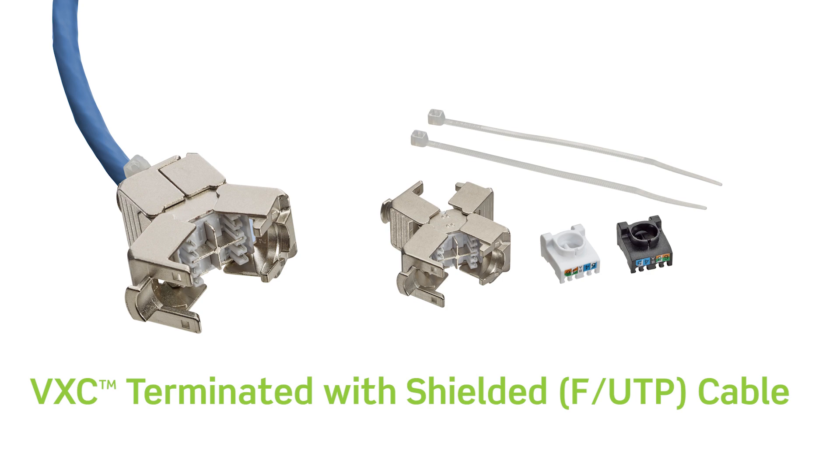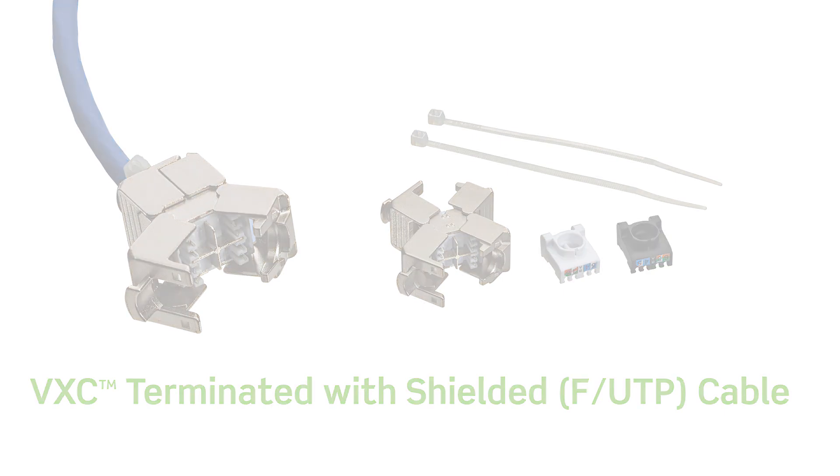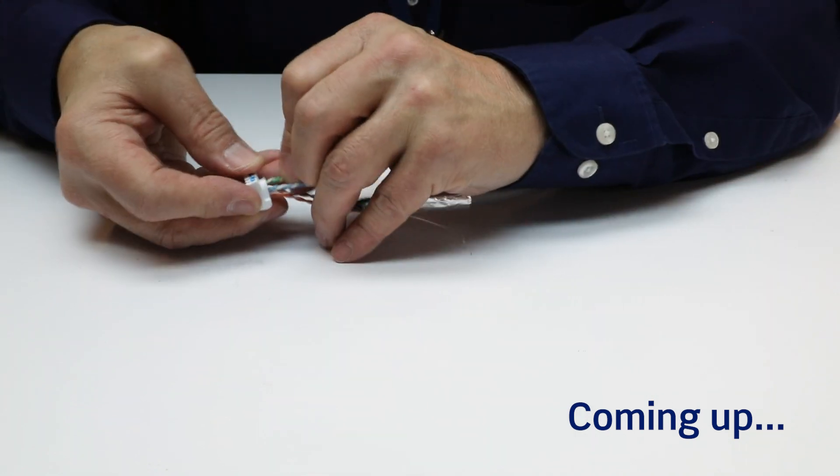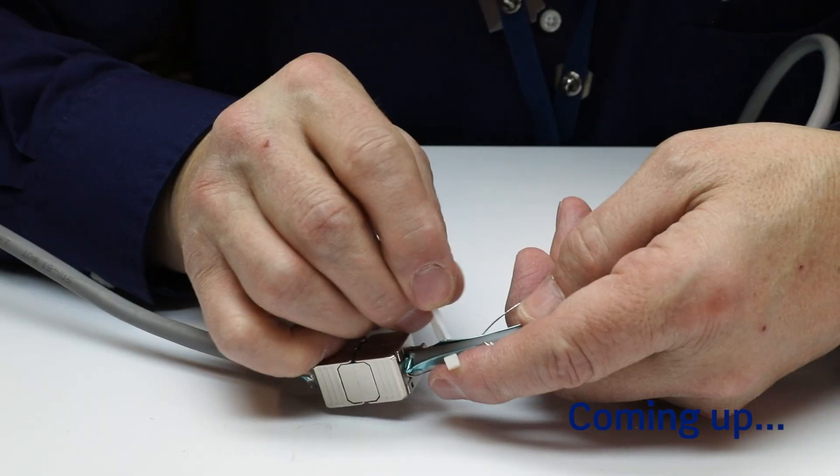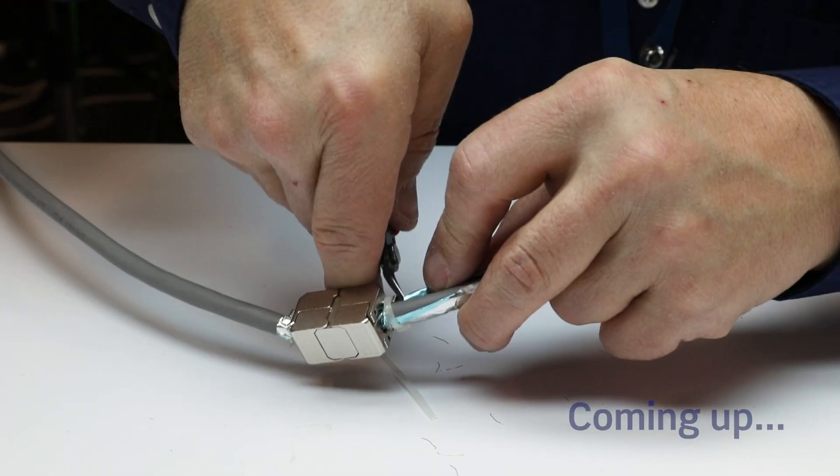The coupler is plenum rated and can be used in riser and plenum applications. In this video we will demonstrate the use of the VXC coupler as a consolidation point connecting two sections of shielded twisted pair cable.